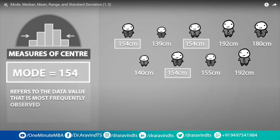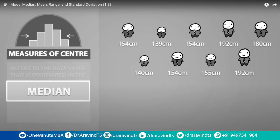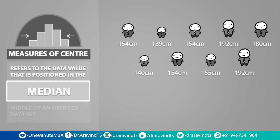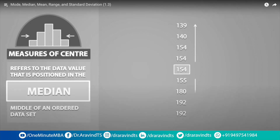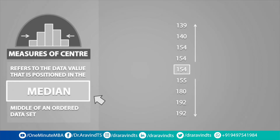The median refers to the data value that is positioned in the middle of an ordered data set. Students often forget that to find the median, your data must be first put into order — we usually order the data set from smallest to largest. We can clearly see that the number 154 is in the middle of the data set because there are 4 data points above it and 4 data points below it, so the median is equal to 154.